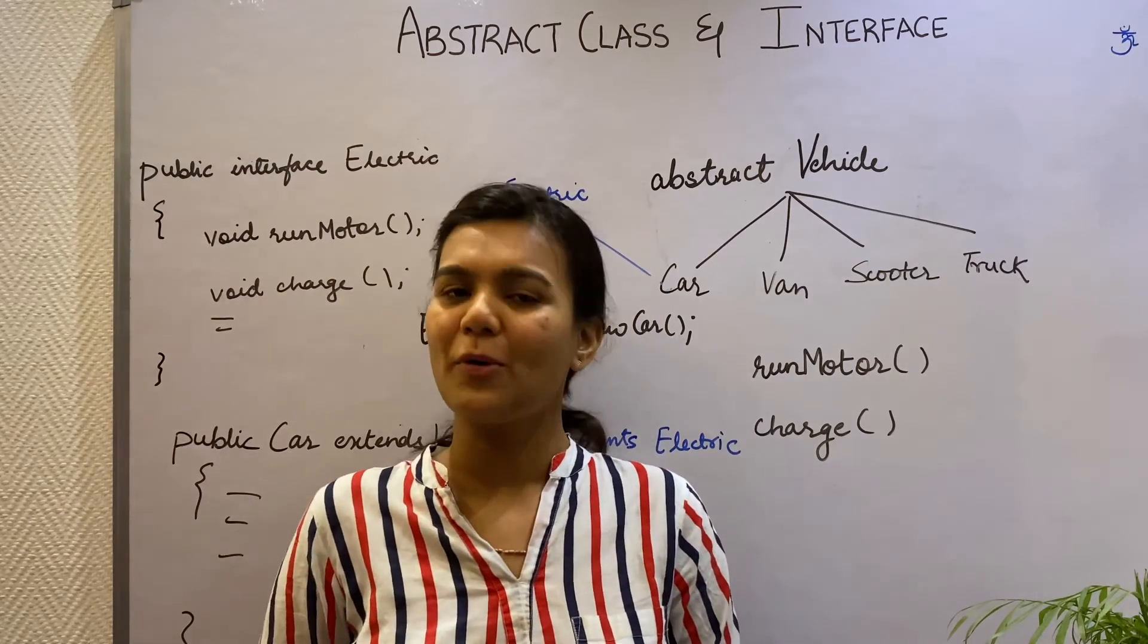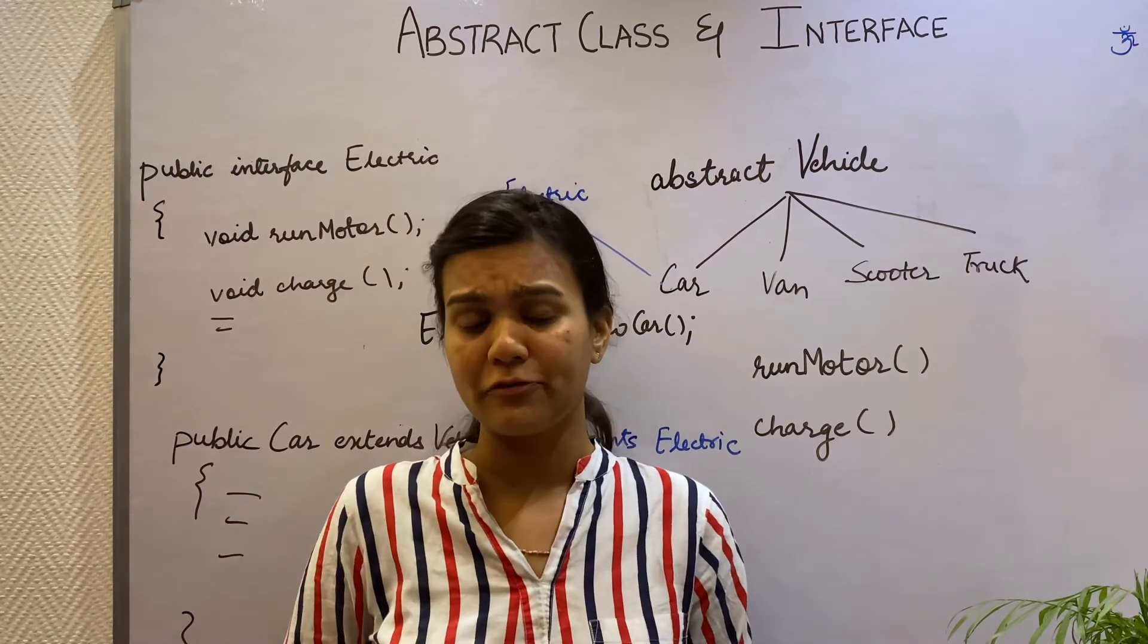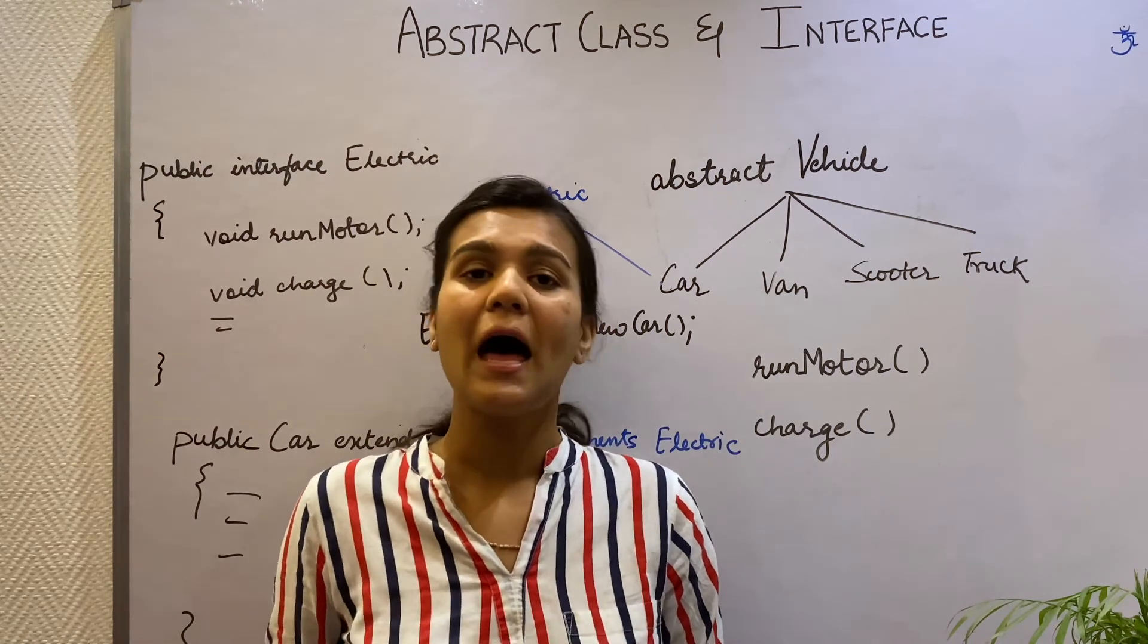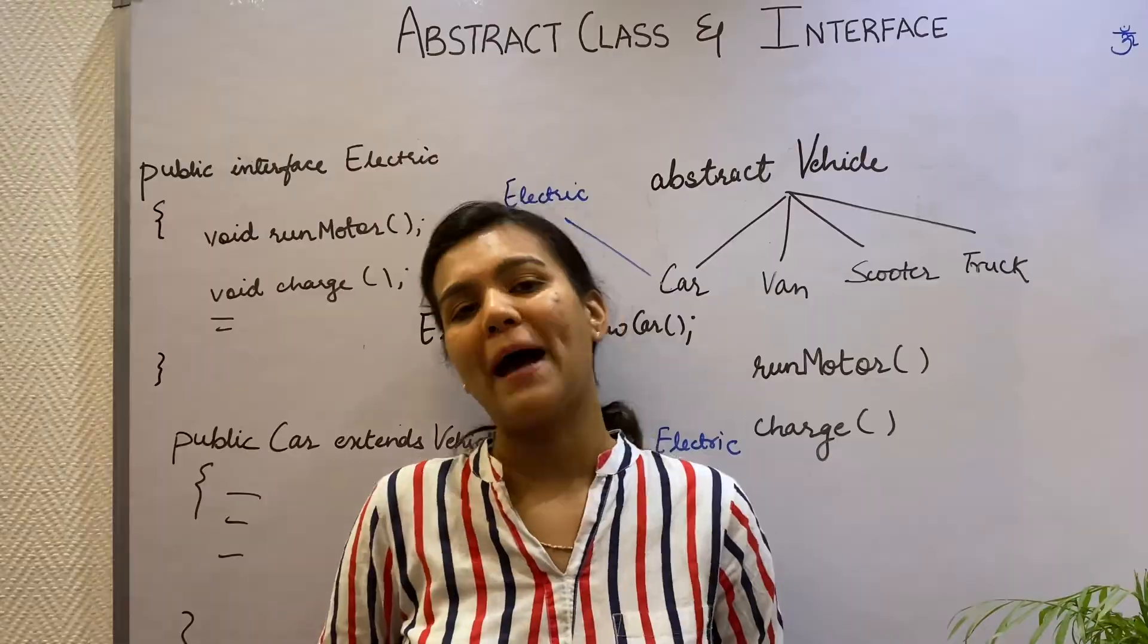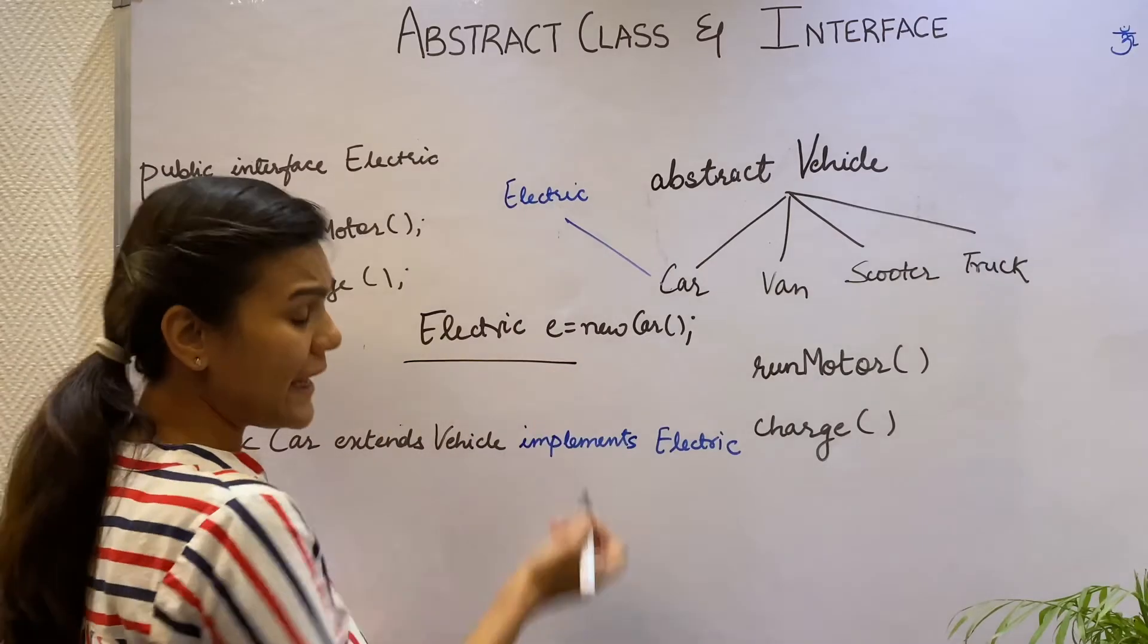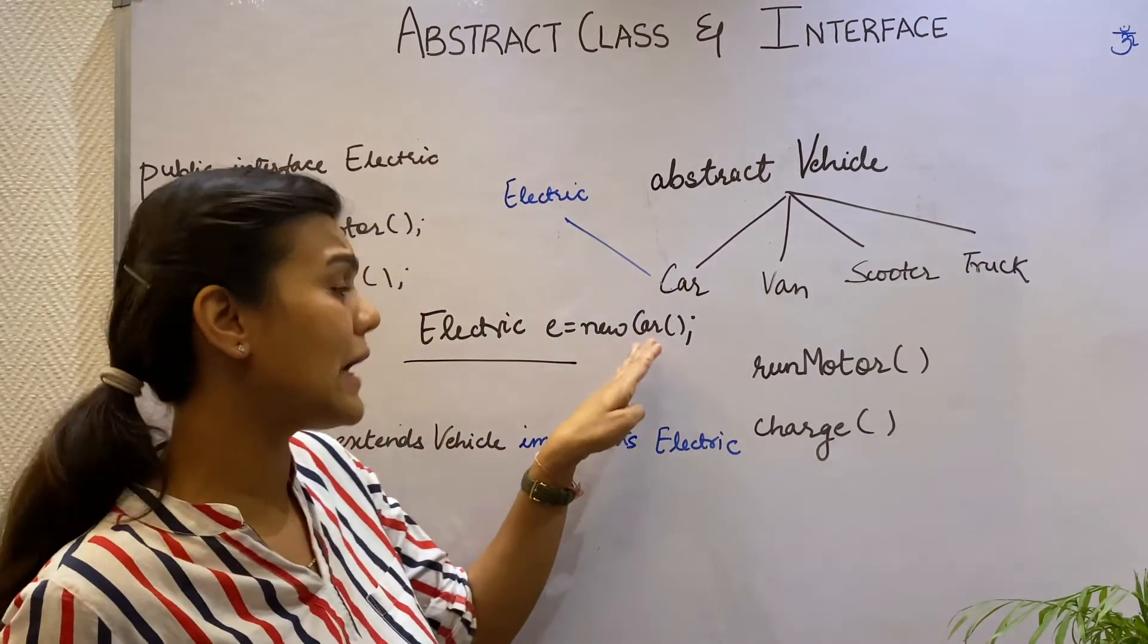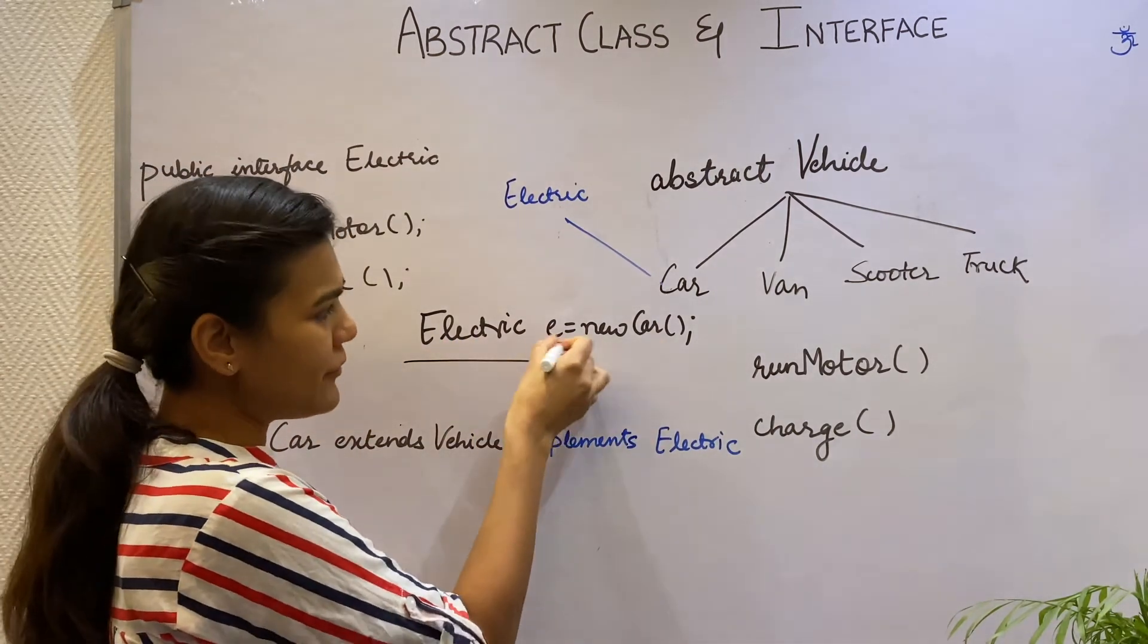Now some important points about interfaces. Interfaces can extend other interfaces similar to how a class extends another class. A class implementing the child interface will have to provide implementations for all the methods of the interfaces of the inheritance hierarchy. Since the interfaces are backbone for polymorphism, we can use the interfaces for reference type and can assign the class object to the interface reference type. So here I have created a Car object and assigned it to the Electric interface reference type E.